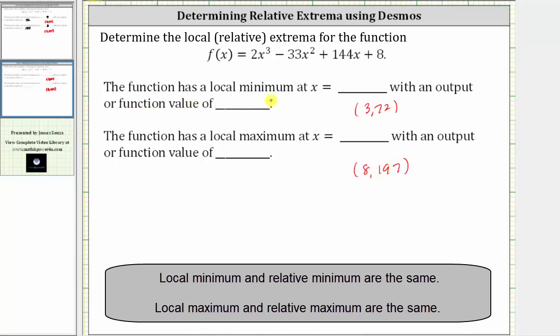Which means the function has a local minimum at x equals three with an output or function value of 72, and the function has a local maximum at x equals eight, with an output or function value of 197.